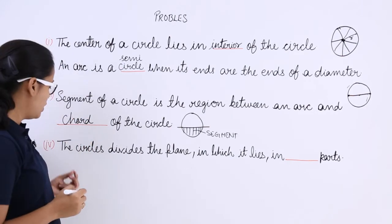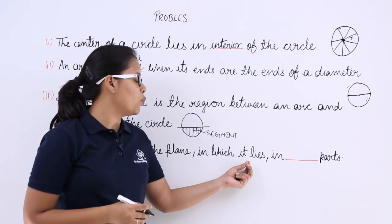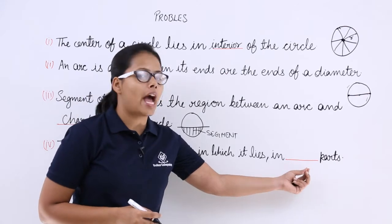Am I right? Now let's move on to the fourth problem. The circle divides the plane in which it lies in blank parts.